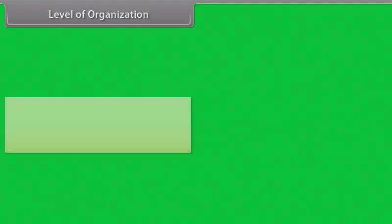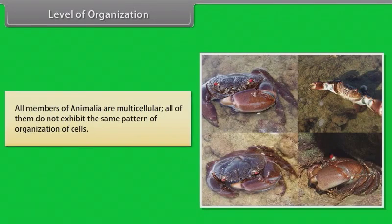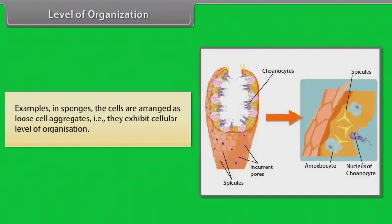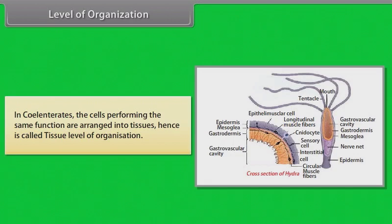Level of organization: All members of Animalia are multicellular, but they do not all exhibit the same pattern of organization of cells. In sponges, the cells are arranged as loose cell aggregates — they exhibit cellular level of organization. In cnidarians, cells performing the same function are arranged into tissues, hence it is called tissue level of organization.